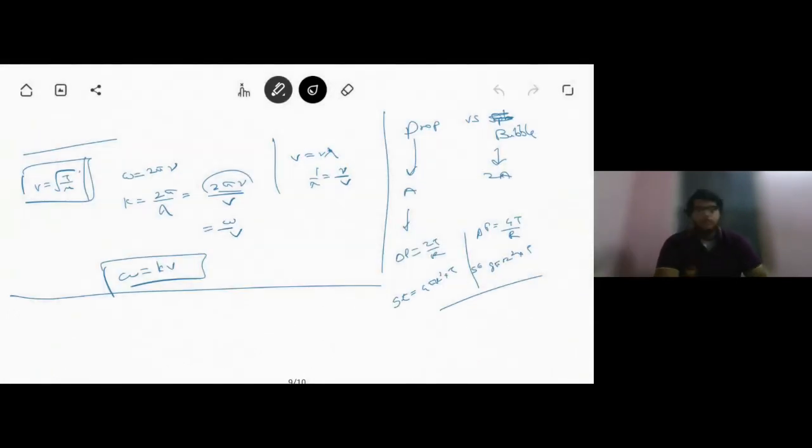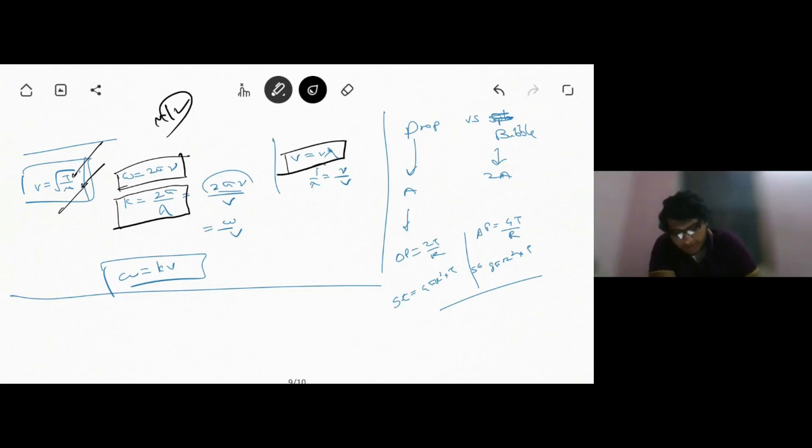Now suppose we have a string in which we have a wave propagating. The velocity of the wave is given by V equals root of T by mu, where T is tension in the string and mu is linear mass density, that is mass by length. Omega is given by 2 pi nu, and K propagation constant is given by 2 pi by lambda. V equals nu lambda, so 1 by lambda can be written as nu by V. Substituting it here, we can get that K equals omega by V, or omega equals K V.